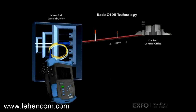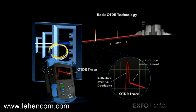Let's travel down a 100-kilometer fiber and see a sample of different optical events that the OTDR can detect. The first event is reflective and located right at the OTDR port. Because the OTDR is mechanically connected to the fiber under test, the connection creates an air gap, which causes a reflective dead zone where no measurement can take place.